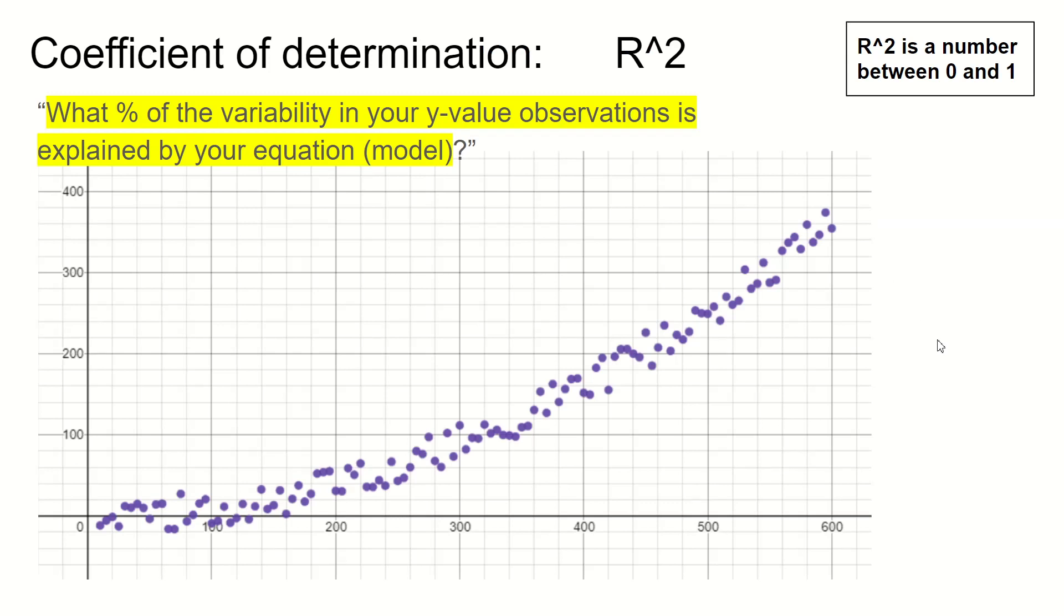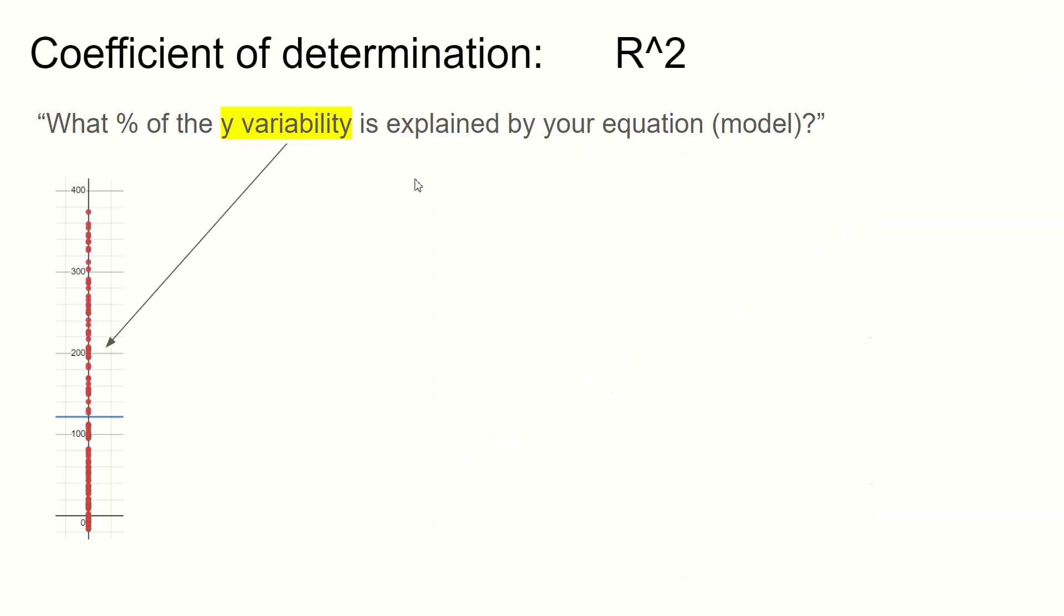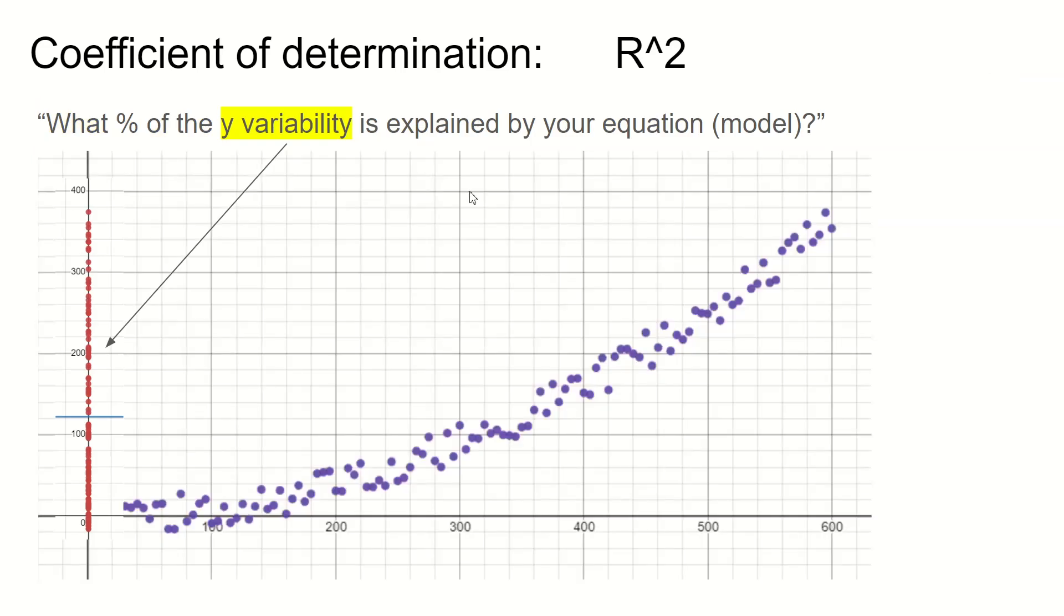Let's talk about R squared. R squared is sometimes called the coefficient of determination. And you could think about it as what percent of the variability in your Y value observations is explained by your equation, is explained by your model. That's a big sentence. Let's break it apart a little bit. So here's the perspective you want. The thing that we're trying to understand is the variability in our Y measurements.